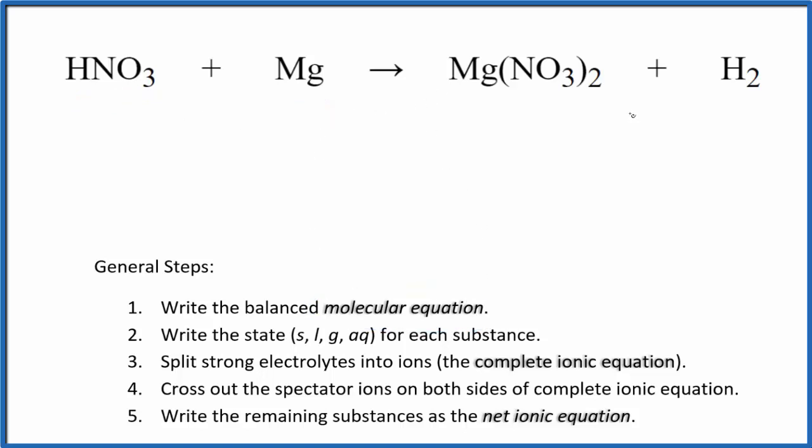This here is the molecular equation. I can see that I have two of these nitrates here and only one here. So I'm going to put a two in front of the nitric acid. Now I have two nitrates, I have two hydrogens, two hydrogens here, magnesium and magnesium. That's the balanced molecular equation.